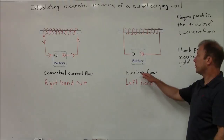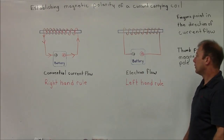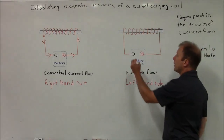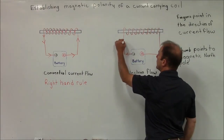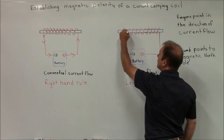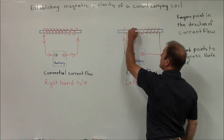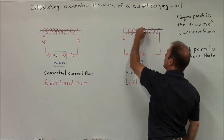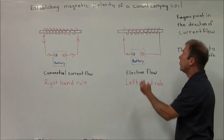Now using electron flow — you know that current goes from negative to positive. And so we can establish the current flow on the coil.